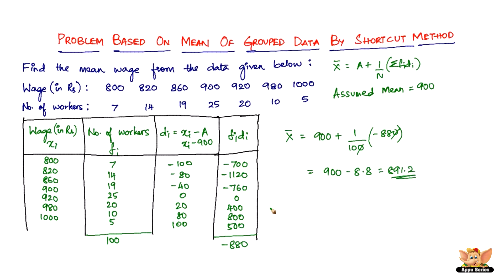So therefore the mean wage is found to be rupees 891.20. So this is the mean wage of the workers given in this frequency distribution.